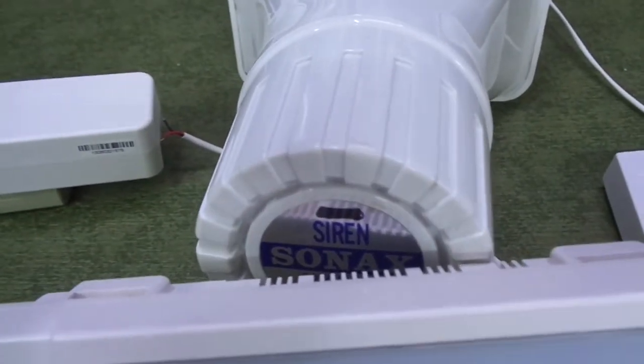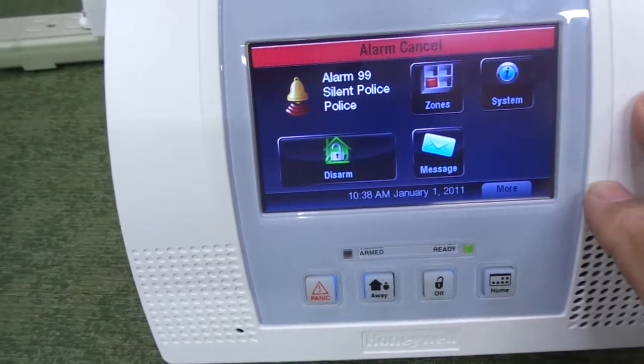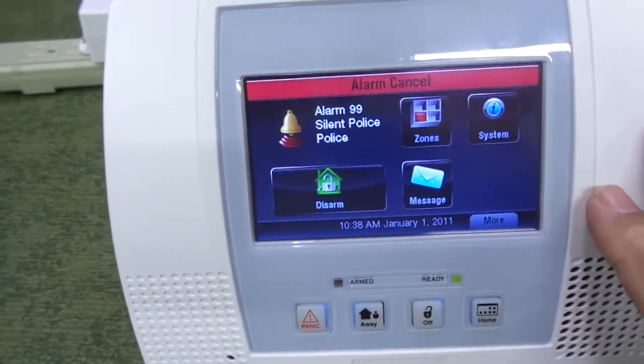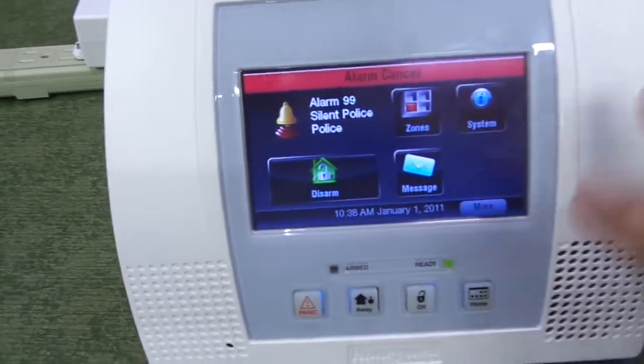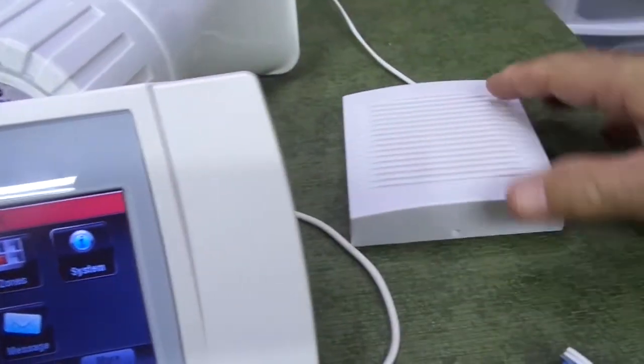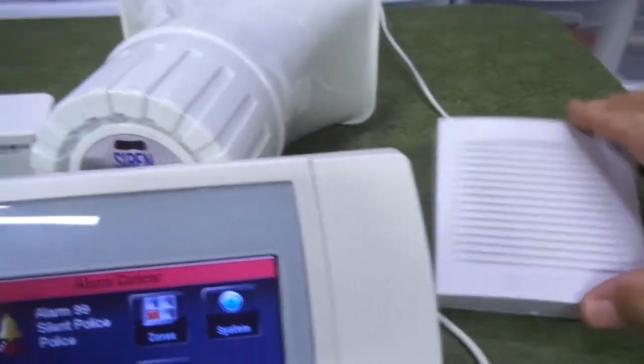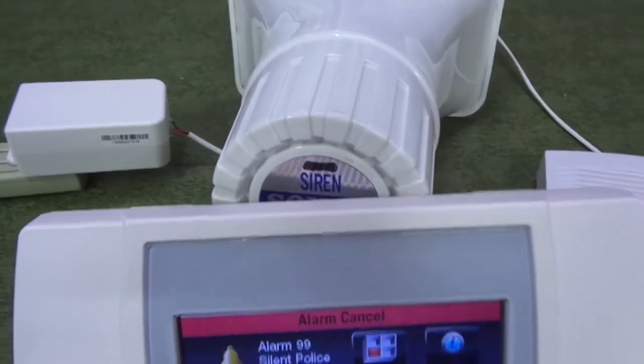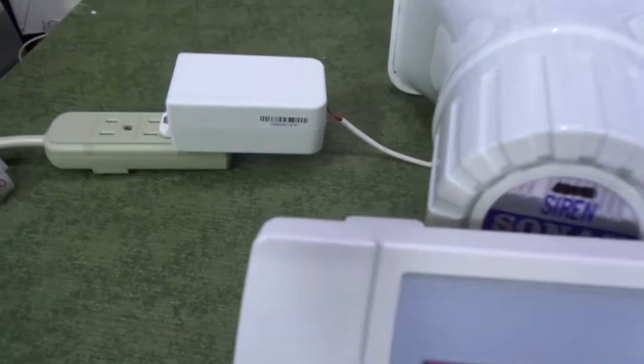Now if you had cell phone modules and things like that it may draw some more, but just the basic system draws very little current. Surprisingly you could actually parallel both an inside siren speaker like this, this is a complete siren not just a speaker, and another 30 watt outside siren and there'd still be enough current coming off of the power supply to sound them both.